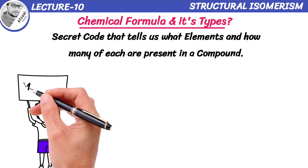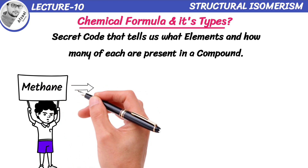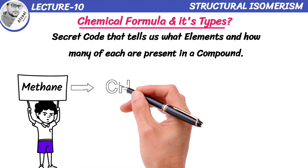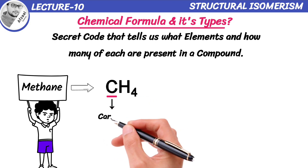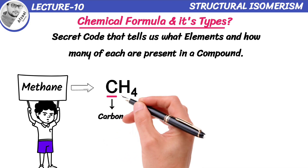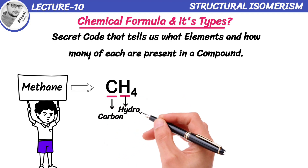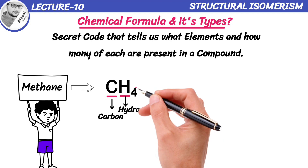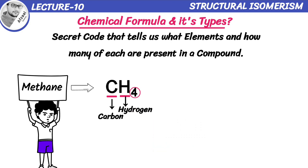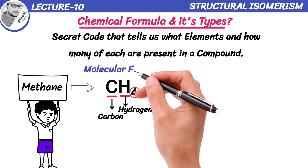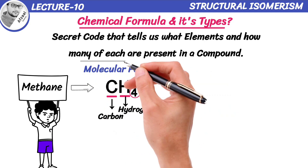I have an example of methane. Its chemical formula is CH4. C stands for carbon and H represents hydrogen. The number 4 after H tells us that there are 4 hydrogen atoms bonded to 1 carbon atom. So we can say it is a chemical formula for methane. This formula is also known as molecular formula.